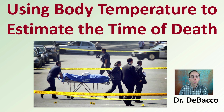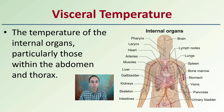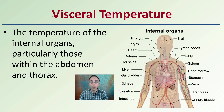Here at Tobacco University, we're going to be looking at using body temperature to estimate the time of death and how we would go about calculating that. First off, we need to understand the different parts of temperature. We have something called the visceral temperature, which is the temperature of the internal organs, particularly within the abdomen and thoracic cavity — those interior core organs. That's going to be important to note when we're looking at taking temperature.